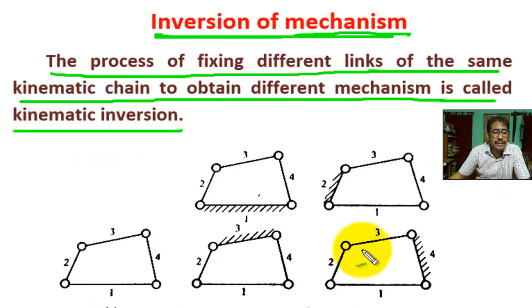It is seen that different mechanisms are obtained by fixing different links. Here link number one is fixed, here link number two is fixed, here link number three is fixed, here link number four is fixed - fixing different links one at a time in a kinematic chain.